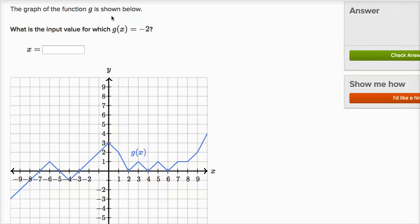The graph of the function g is shown below. What is the input value for which g of x is equal to negative two?